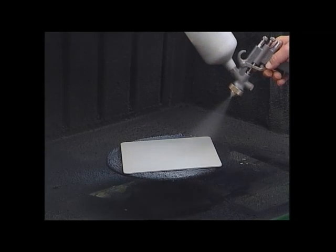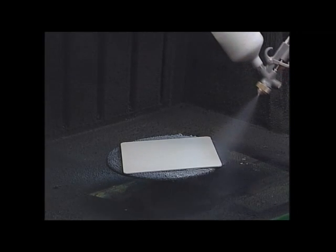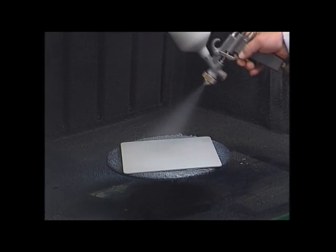Another method is the full surface spraying with adhesive on sheets or formed parts. Here, flock adheres onto the entire surface previously coated with adhesive.